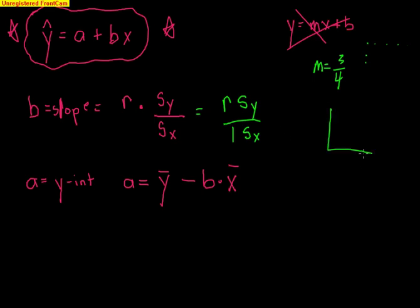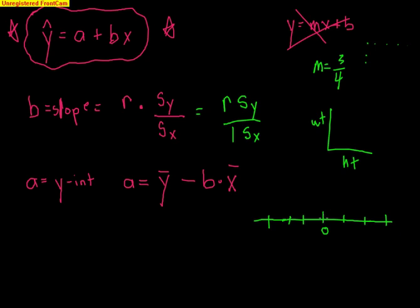Let's use height as x and weight as y — we're predicting weight from height. You're always trying to predict the y. Every time you move up one standard deviation in height (x), y (weight) goes up only r standard deviations. Think of it like z-scores: you go 0, 1, 2, 3 standard deviations. x goes up one standard deviation in height, and y goes up r standard deviations in weight.